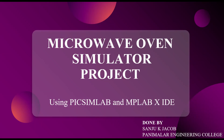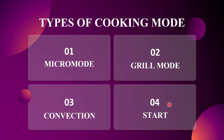In this Microwave Oven Simulator project, we will be using the XC8 compiler in MPLAB X IDE. We will be implementing 4 modes of cooking: the first mode is the Micro mode, the second mode is the Grill mode, the third is the Convection mode, and the fourth is the Start mode.